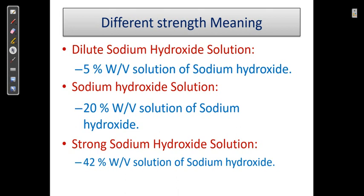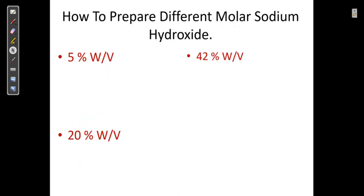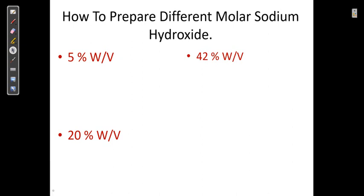When preparing solutions of different strengths, we are more interested in molarity. So let us convert percentage weight by volume into molarity. The direct equation is: Molarity (M) = percentage weight by volume × 10 divided by molecular weight.